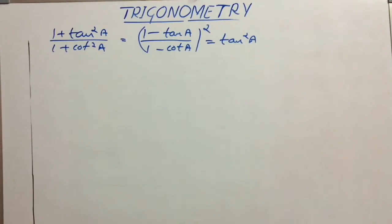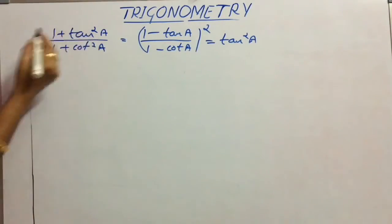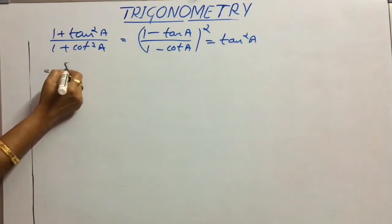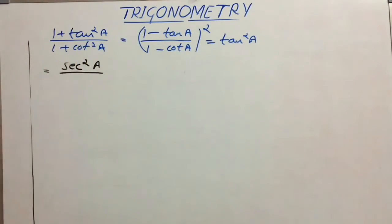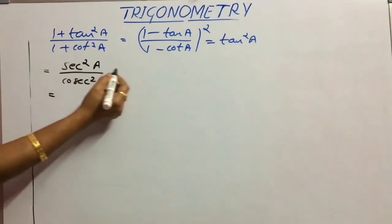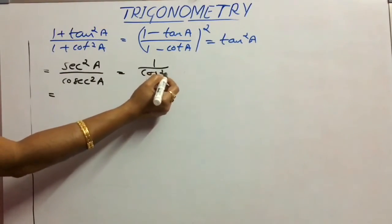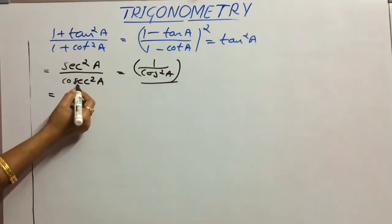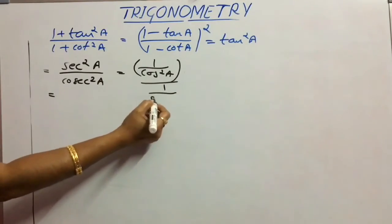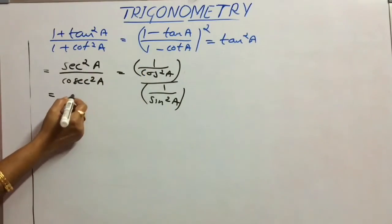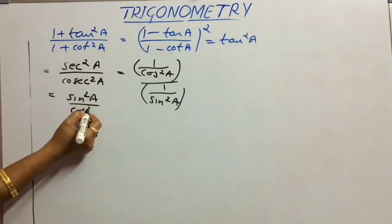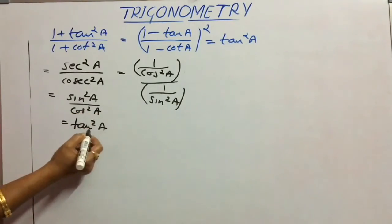Move on to the next question, where we have to prove two identities. Consider (1 + tan²A)/(1 + cot²A), which must equal tan²A. Using the identities 1 + tan²A = sec²A and 1 + cot²A = cosec²A, and since sec²A = 1/cos²A and cosec²A = 1/sin²A, simplifying gives sin²A/cos²A = tan²A, which equals RHS.